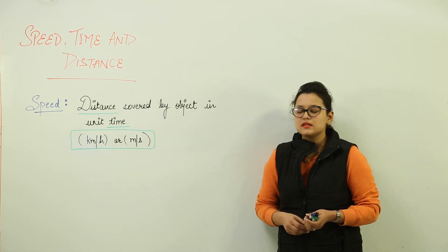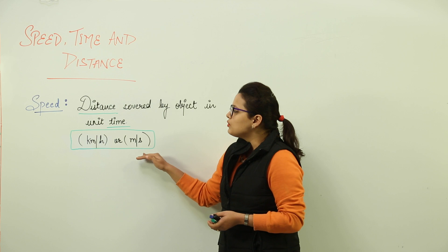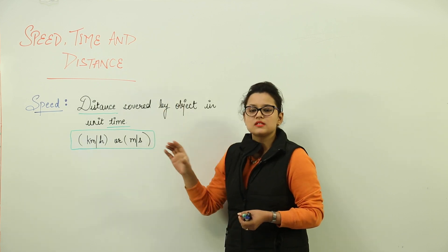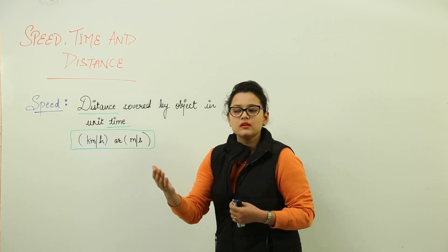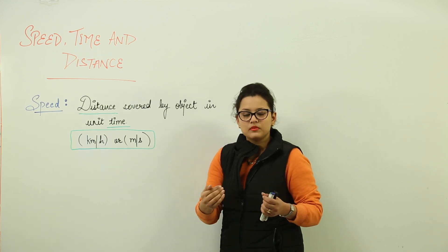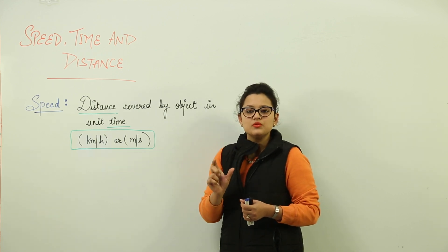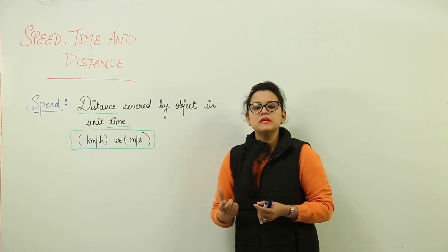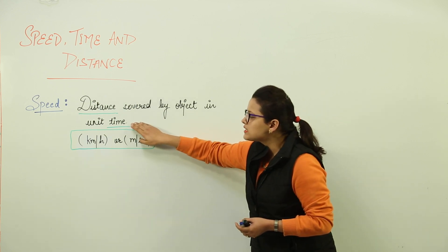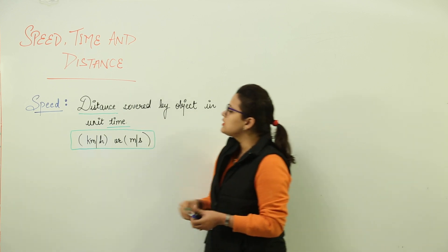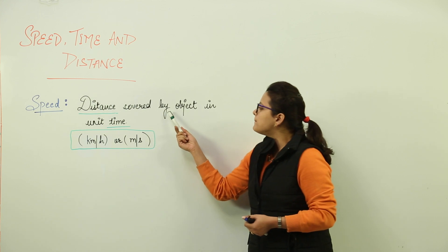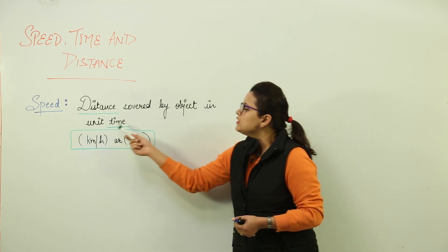Now speed, time and distance. Before moving we should know what is speed. Later on I will explain what is time and what is distance. Say for example like we go to any place — we are going to market, we ask the driver to speed up. That is the time when we are using the word speed. So what is actually speed? Distance covered by object in unit time. Please pay attention to these two words that I have highlighted — distance and time.